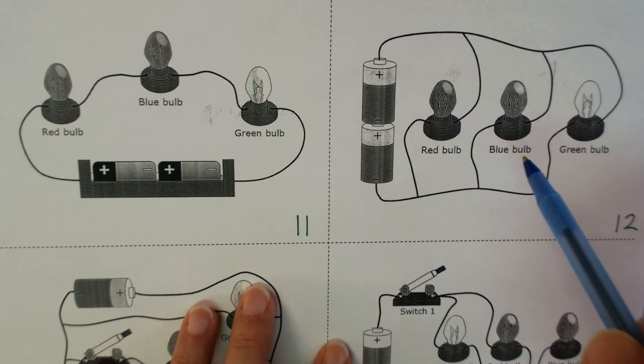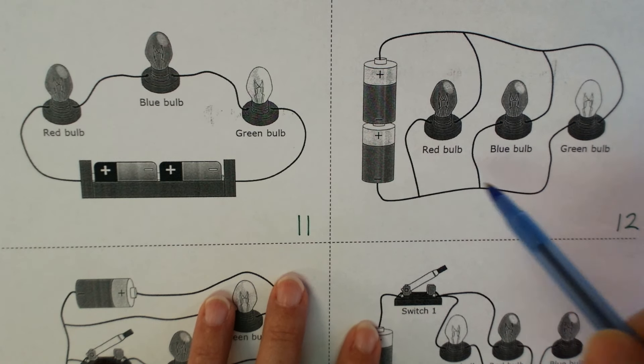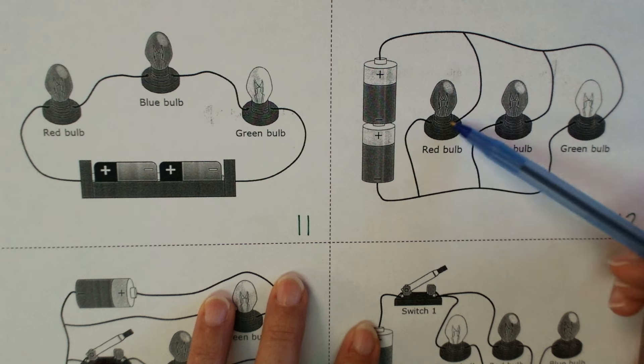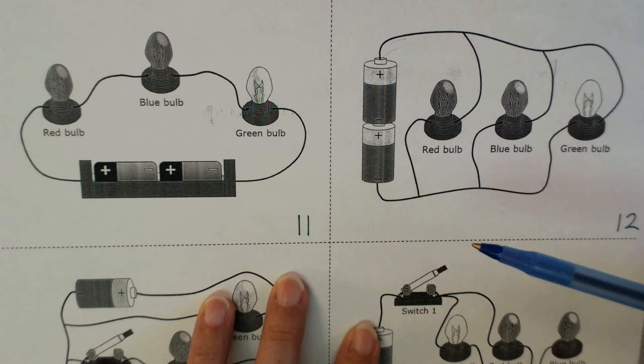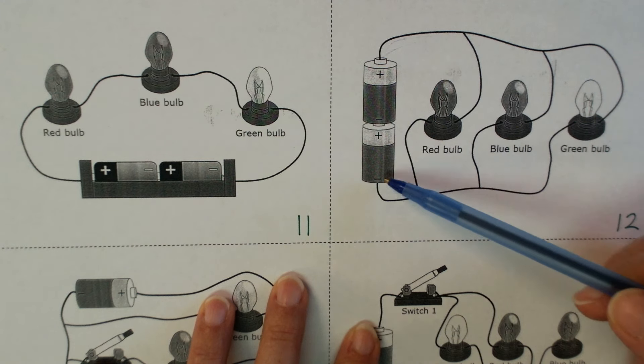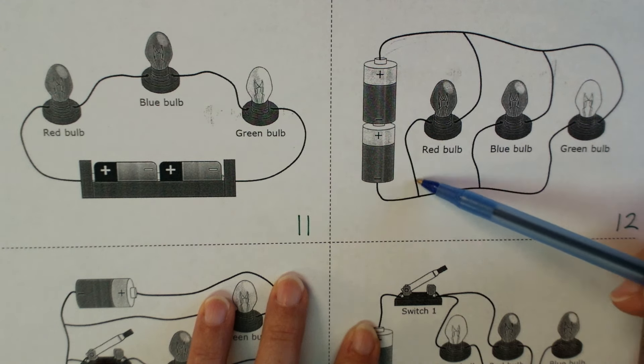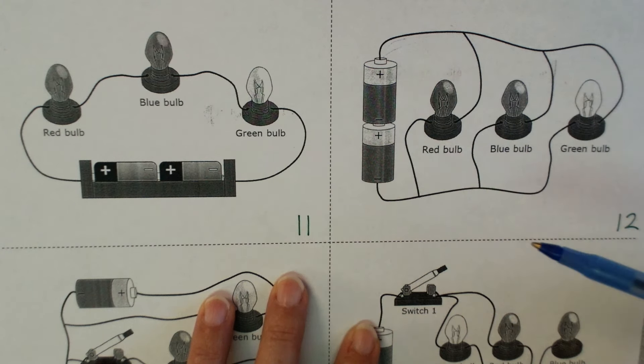So compare this one to this circuit here. I see more than one loop. I see a loop here with the red bulb, a loop with the blue, and a loop with the green bulb. No switches here, but I know electricity is coming out of the negative. If it is, it can make it through all three of these, so all three of those are going to work.